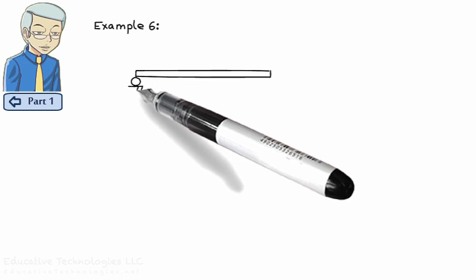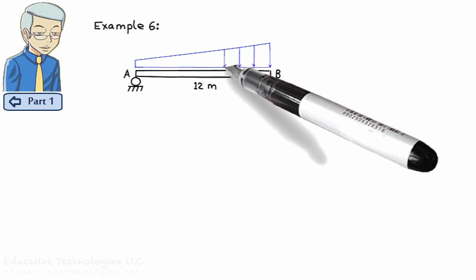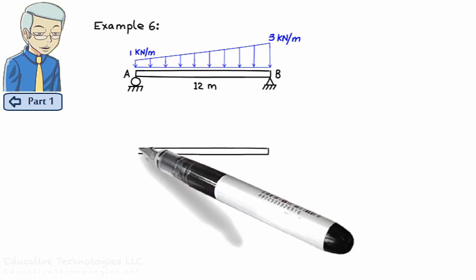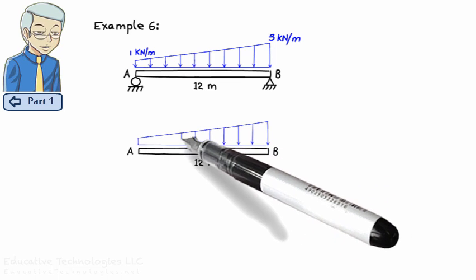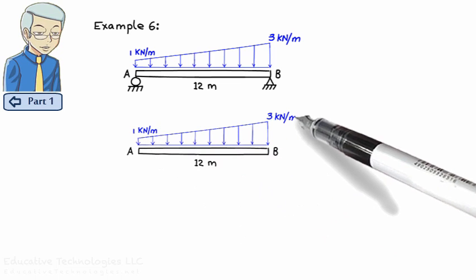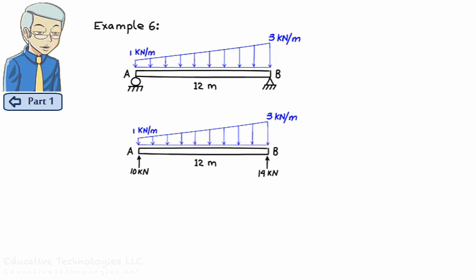Example 6: In this example, we consider a beam subjected to a trapezoidal load. As was discussed in example 3, this beam has a vertical reaction of 10 kN at point A and a vertical reaction of 14 kN at point B.